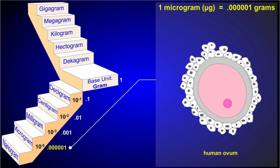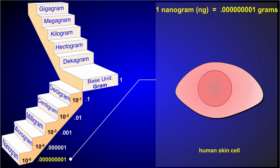Micrograms are a million times smaller than grams. They're extremely small. A human ovum weighs about a microgram. Nanograms are even smaller than micrograms at one billionth of a gram. The average human cell weighs about one nanogram.